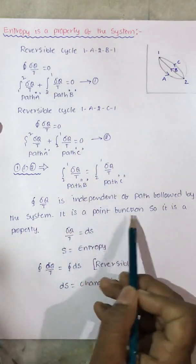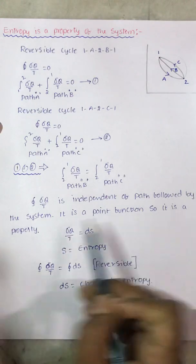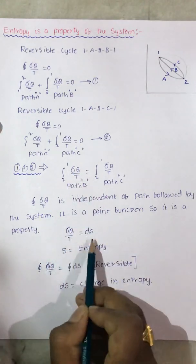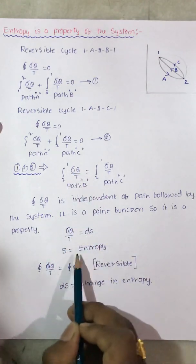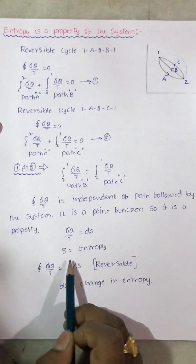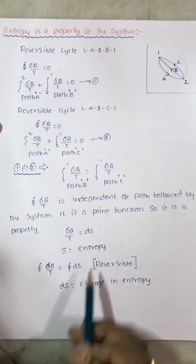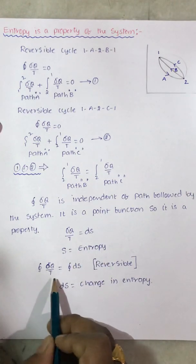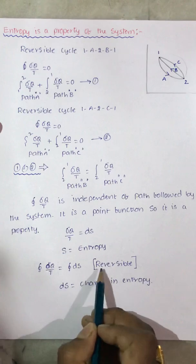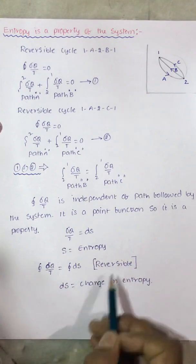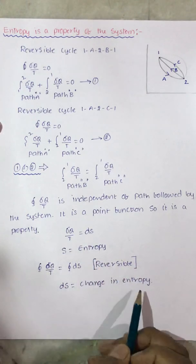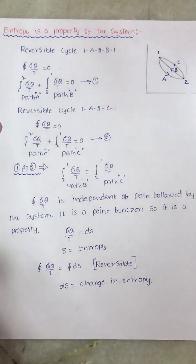So it is a point function, and therefore it is a property of the system. This δq/T is nothing but dS, the change in entropy, where S is the entropy. The cyclic integral of δq/T is the cyclic integral of dS for a reversible process. So dS is nothing but the change in entropy. Thank you very much.